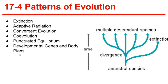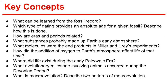Key concepts review: What can be learned from the fossil record? Which type of dating provides an absolute age for a given fossil, and describe how this is done. How are eras and periods related? What substances probably made up Earth's early atmosphere, and what molecules were the end products in Miller and Urey's experiments? How did the addition of oxygen to Earth's atmosphere affect life of that time? Where did life exist during the early Paleozoic era? What evolutionary milestone involving animals occurred during the Devonian period? What is macroevolution? Describe two patterns of macroevolution. That's it for Chapter 17.